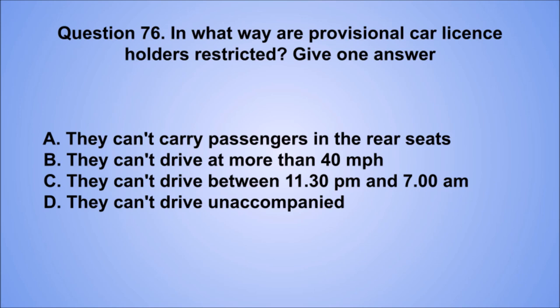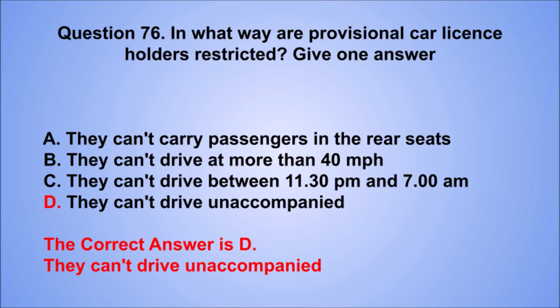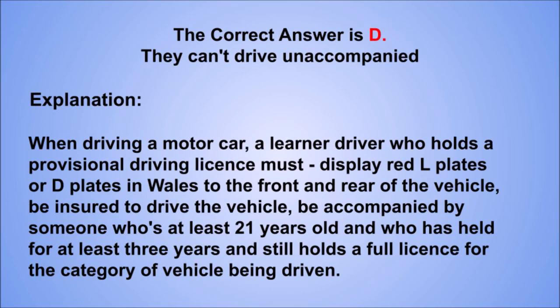Question 76. In what way are provisional car license holders restricted? Give one answer. A. They can't carry passengers in the rear seats. B. They can't drive at more than 40 miles per hour. C. They can't drive between 11:30 p.m. and 7 a.m. D. They can't drive unaccompanied. The correct answer is D, they can't drive unaccompanied. When driving a motor car, a learner driver who holds a provisional driving license must display red L-plates, or D-plates in Wales, to the front and rear of the vehicle, be insured to drive the vehicle, and be accompanied by someone who's at least 21 years old and who has held for at least 3 years a full license for the category of vehicle being driven.